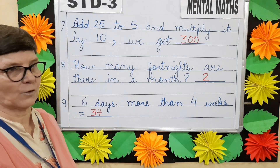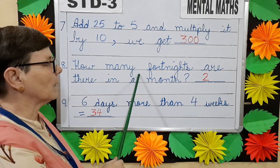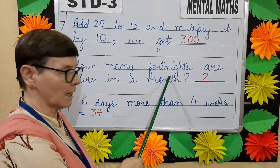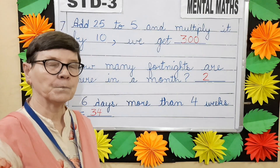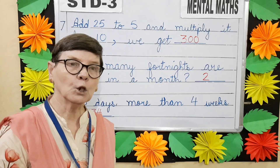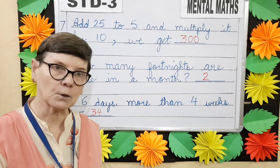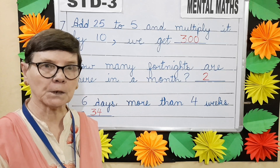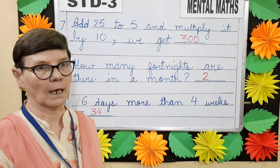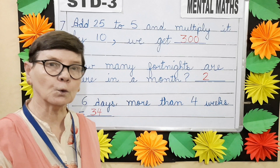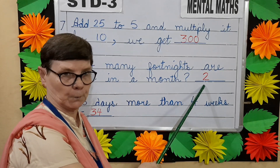Question number eight. How many fortnights are there in a month? Children, two weeks make a fortnight, which equals fourteen days. Therefore in one month we have two fortnights. So we will write two.